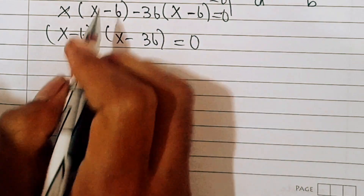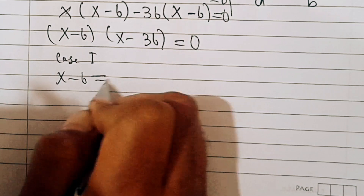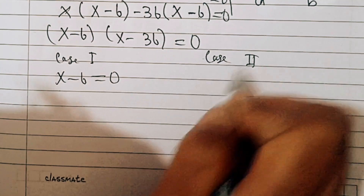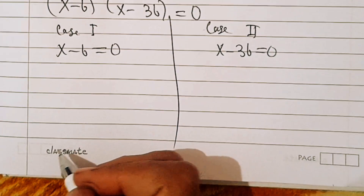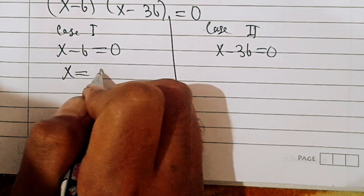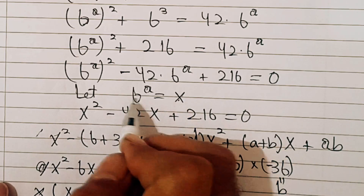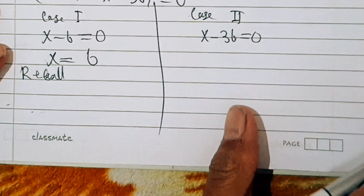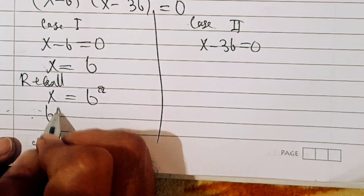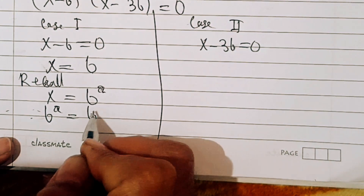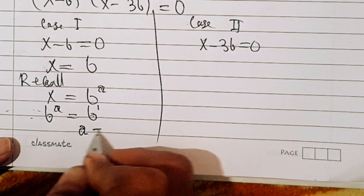So we have two solutions. In case one, x minus 6 equals 0, meaning x equals 6. Recalling that x equals 6 power a, we have 6 power a equals 6, which is 6 power 1. Since the bases are the same on both sides, the powers are equal, so a equals 1.